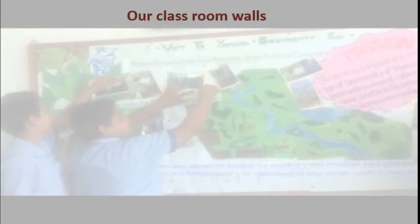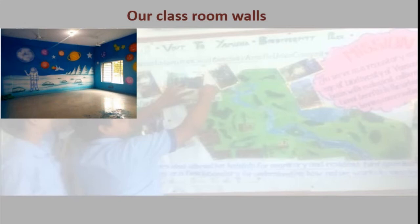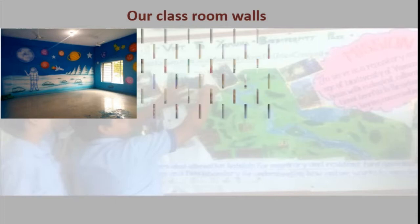Students, we are going to visit our pre-primary and primary classrooms. We will see decorated and beautiful pictures on the walls of these classes. This is the wall decorated with space pictures — here we can see astronomers, different planets, rockets, etc.